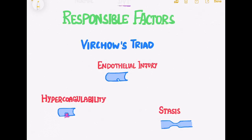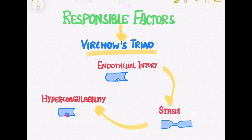Factors that lead to deep vein thrombosis fall under the common criterion of Virchow's triad. The three components of Virchow's triad are endothelial injury, stasis of blood flow, and hypercoagulability.